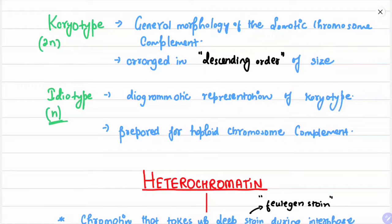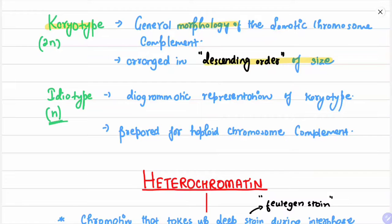The karyotype is the general morphology of the somatic chromosome complement (the 2n number), arranged in descending order of size — from the largest chromosome down to the smallest. The idiotype is the diagrammatic representation of the karyotype, represented in the form of a diagram, and is prepared for the haploid chromosome complement.